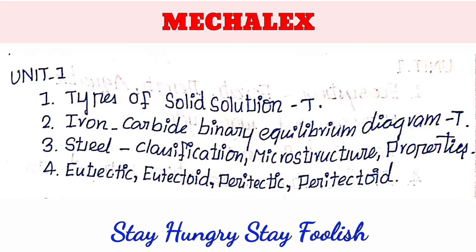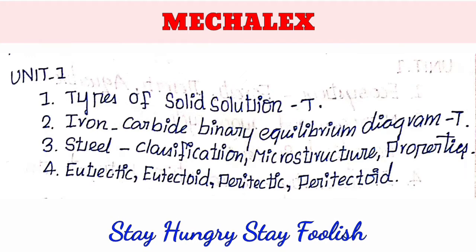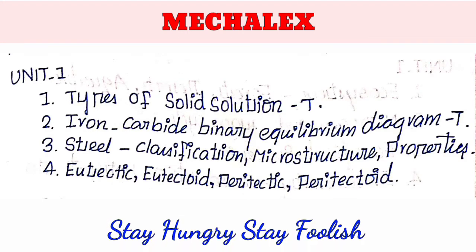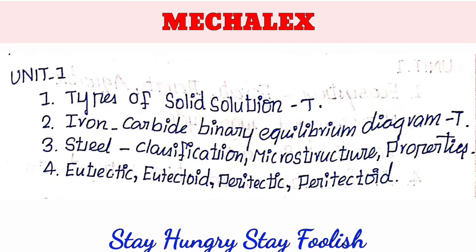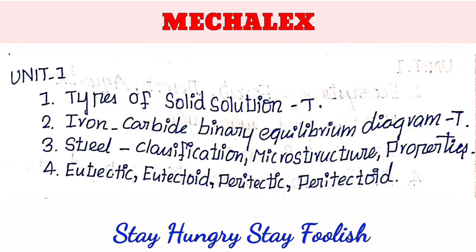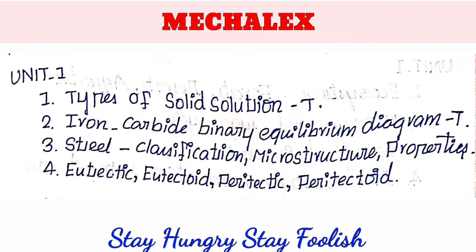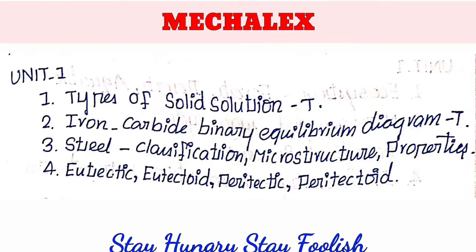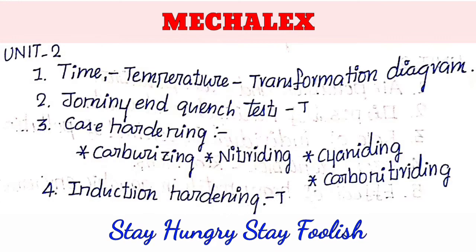Third topic: Classification, microstructure and properties. We will find two details — one question in part B and one in part A. Peritectoid — the composition is already shown, and we will find two details.